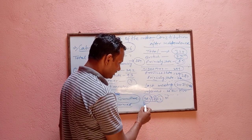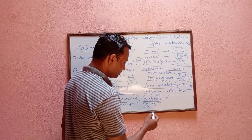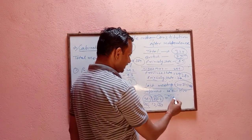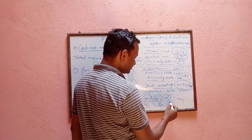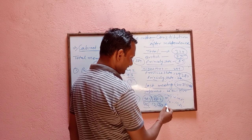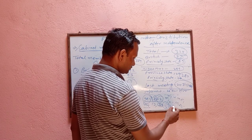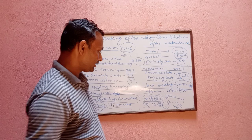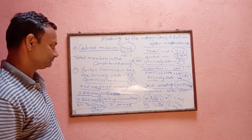At present time, there are 450 articles, 12 schedules, and 22 parts. The 9th schedule was added in 1951, the 10th schedule in 1985, and the 11th and 12th schedules were added in 1993. So there are 12 schedules in our constitution at present.